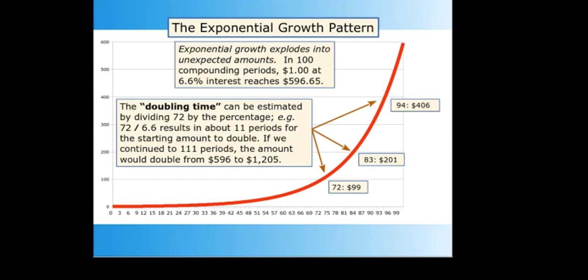The most important thing to understand about the exponential growth pattern is the doubling time. A rough approximation of the doubling time is found by dividing 72 by the percentage rate. The result is the number of compounding periods until the starting amount is doubled. For example, 72 divided by 6.6 equals approximately 11 periods. From wherever you begin on the graph, the amount doubles every 11 periods.